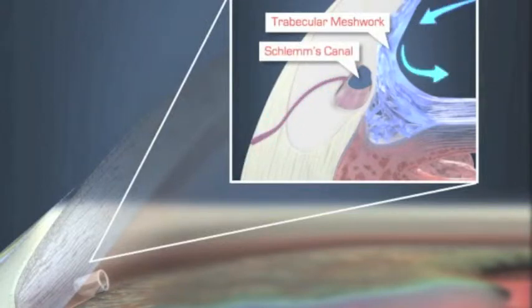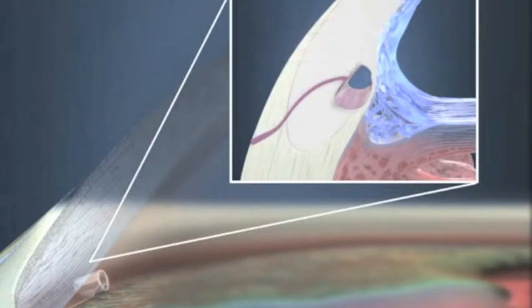When this outflow system does not function well, the pressure in your eye increases. The eye stent implant is designed to bypass this blockage within the trabecular meshwork and improve the flow of fluid out of your eye.